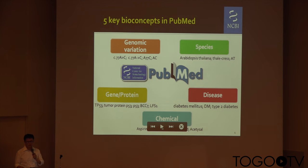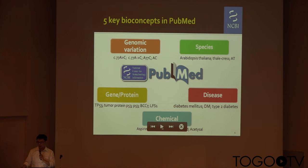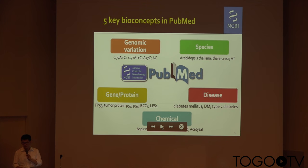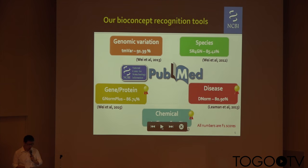So we defined several key concepts, including the three key concepts I just mentioned — chemicals, genes, and diseases — from the user query load results. We also have two additional concepts, which are variation and species. Once we defined these five key concepts, the next thing we want to do is to recognize that information from the literature, from the abstract. So we defined five individual recognition tools to recognize those entities.